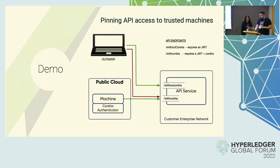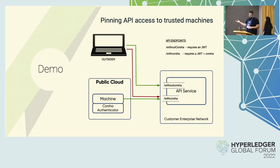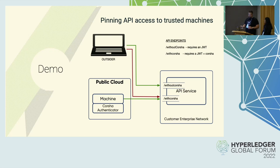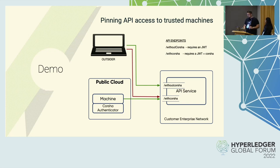I'm going to show it in action. What we have here today is a demo of pending API access to trusted machines. We've set up a mock API service in the cloud that represents a service we'd be calling with Korsha protection. Also in the cloud, there's a mock API consumer in the bottom left — a machine deployed with a tightly coupled Korsha authenticator. It's able to call this API service, which has two endpoints: the first without Korsha requires a simple API key; the second with Korsha requires that API key plus your dynamic one-time use Korsha credential.